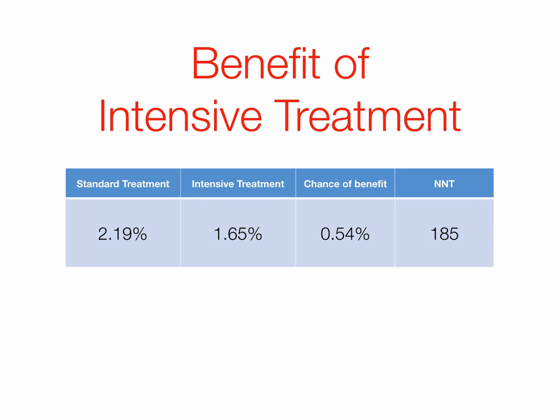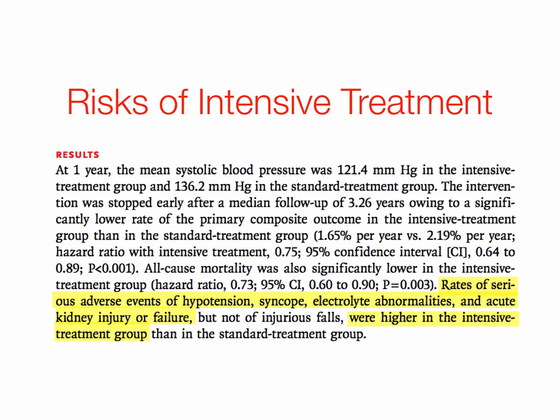So let's look at the risks of this intensive treatment, from the exact same paragraph. Rates of serious adverse events — including hypotension (low blood pressure), syncope (blacking out), electrolyte abnormalities, and acute kidney injury or failure — were higher in the intensive treatment group. So we see there are a lot more negative events by lowering your blood pressure intensively, and the benefit occurs for only one out of every 185 people.